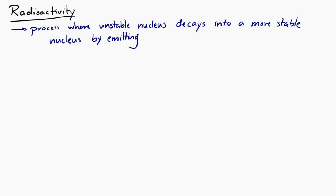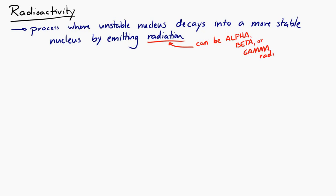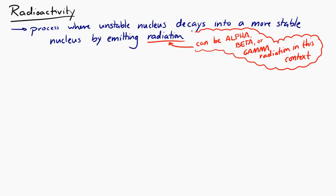We have to be a little bit careful about that word 'radiation' in physics, because it can refer to different things depending on context. When we talk about radioactivity here, radiation refers to one of three things: either alpha radiation, beta radiation, or gamma radiation.